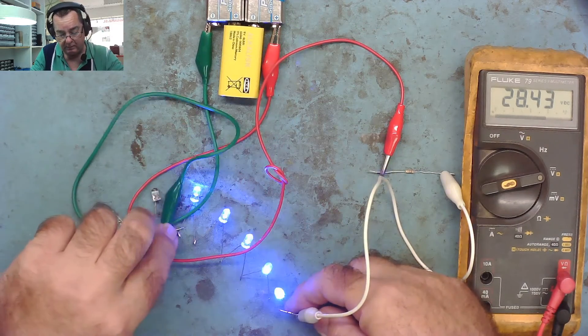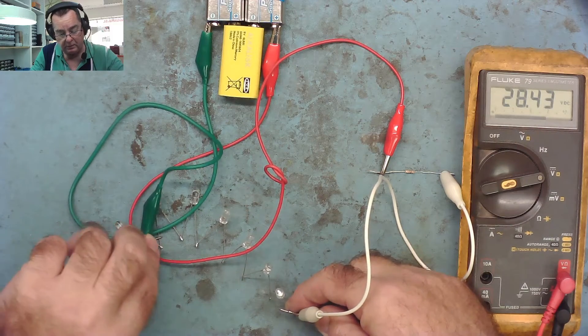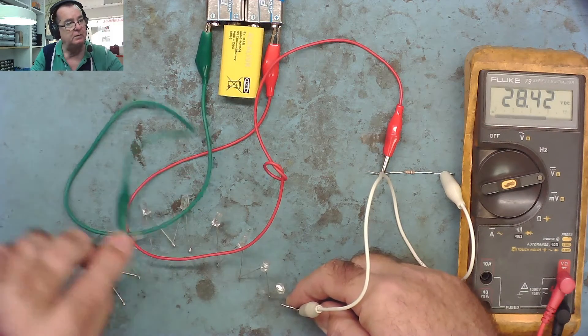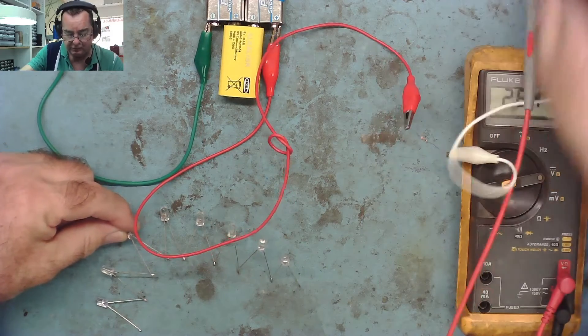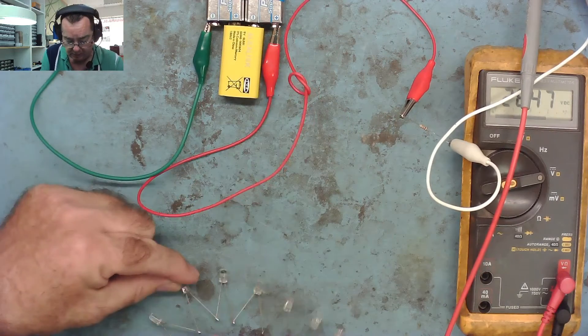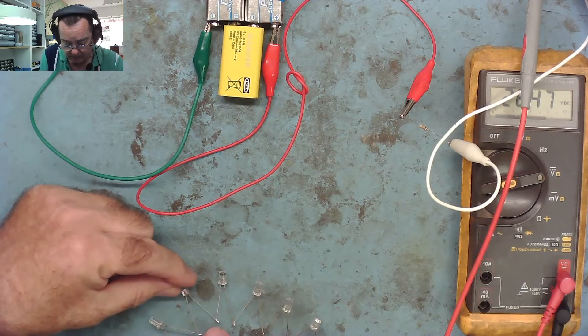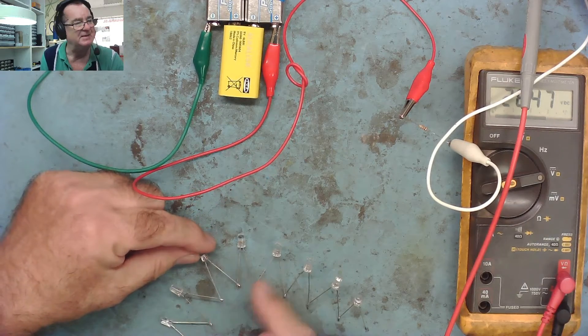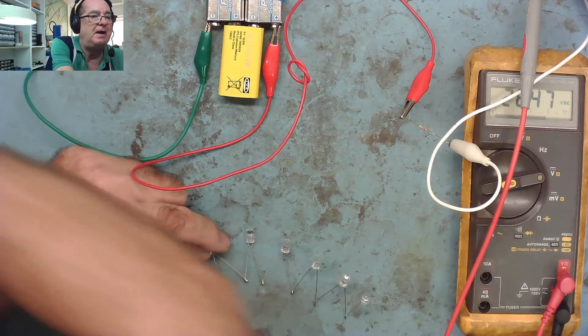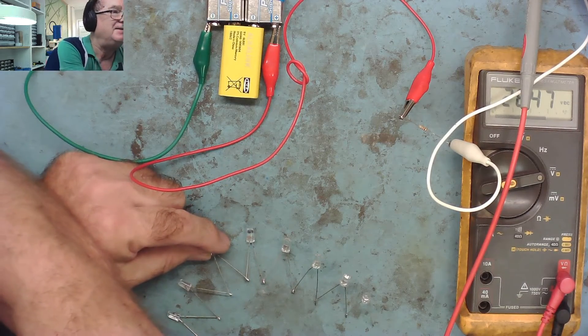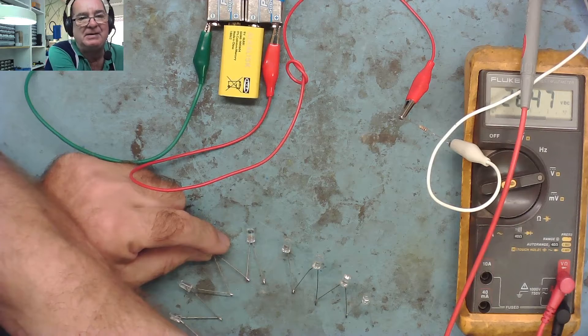Number six isn't working. So number six is our faulty LED. Quite simple - just work your way along. When it stops working, that's your faulty LED. I've actually simulated this by connecting the LED back to front, just to simulate a faulty LED. Let me now replace that LED - in other words, solder it the right way around - and then let's test it again.